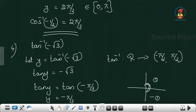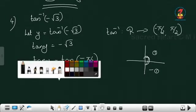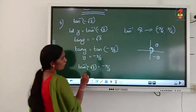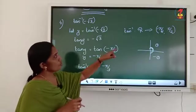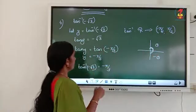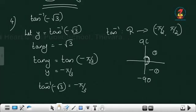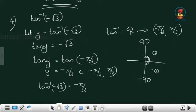What is y? Tan inverse of minus root 3 is minus pi by 3. Is it in the range? Minus pi by 3 is minus 60, and we have minus 90 to 90 as the range of tan inverse. So it belongs to (-π/2, π/2), and minus pi by 3 is the answer.